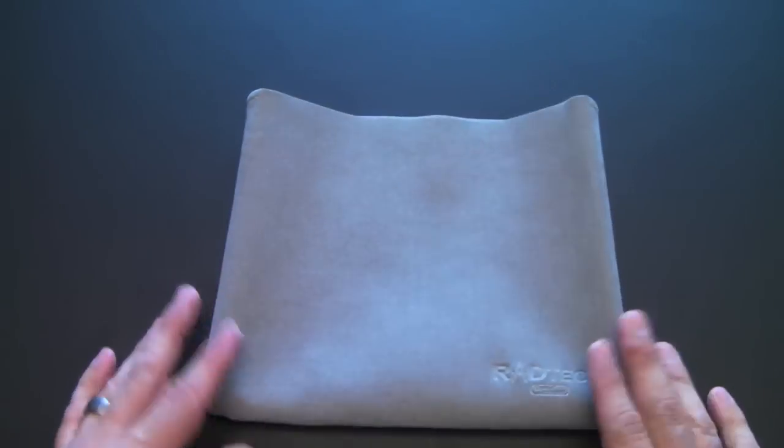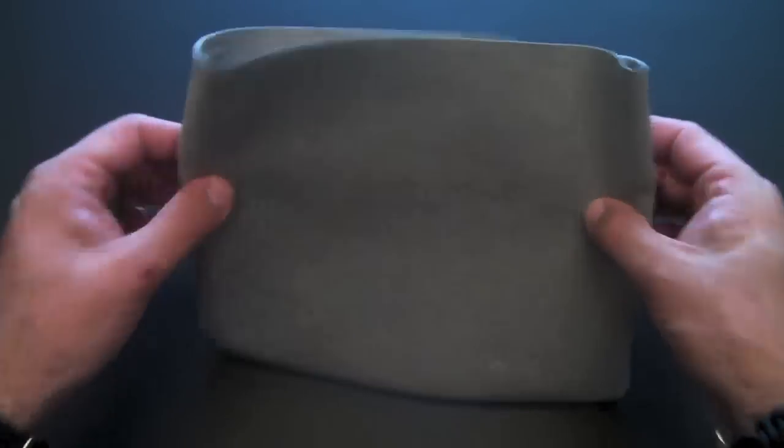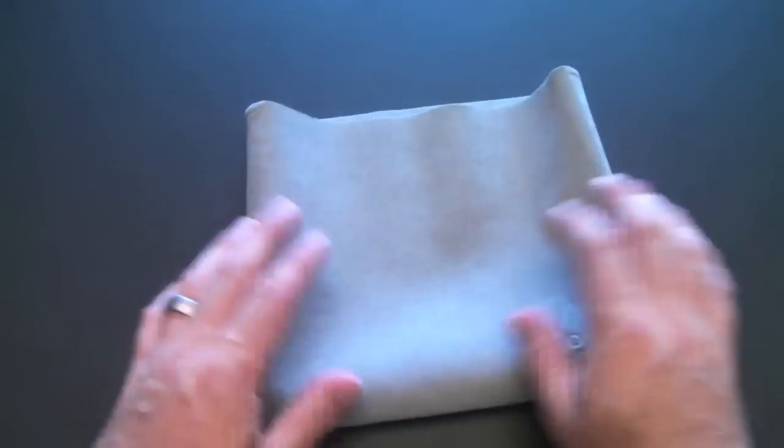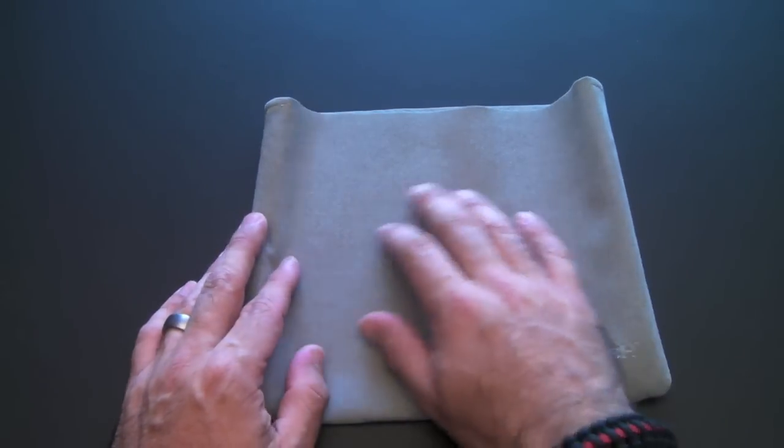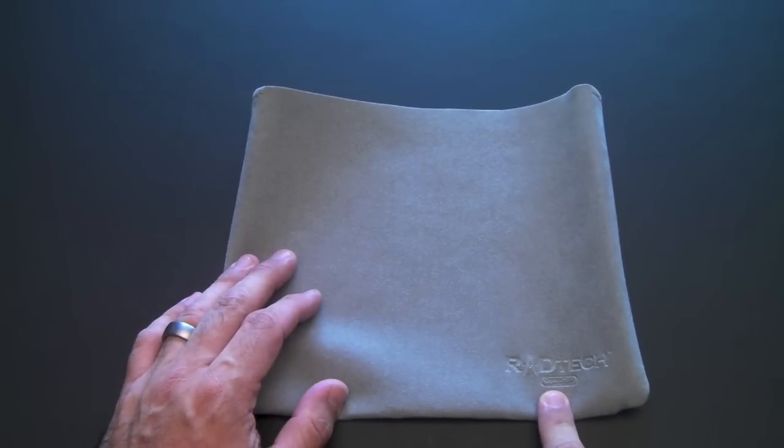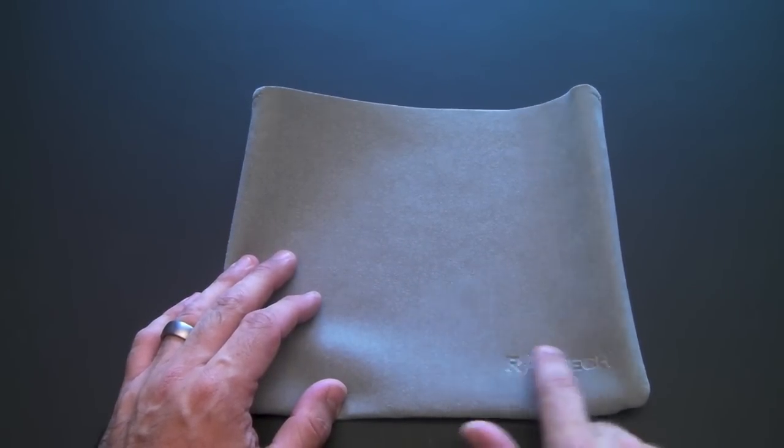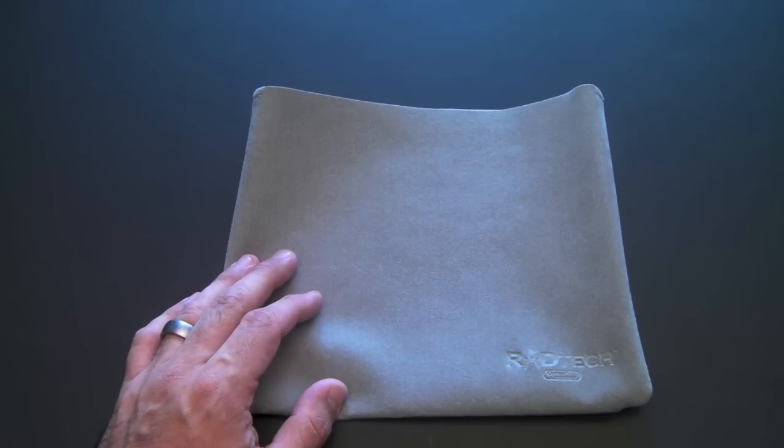This sleeve is basically a glove for your iPad. You can see how thin it is. It feels really nice. That Optex material is kind of like suede microfiber-ish. The logo right there in the bottom right-hand corner, it's kind of embossed in there, real subtle, which I of course like.